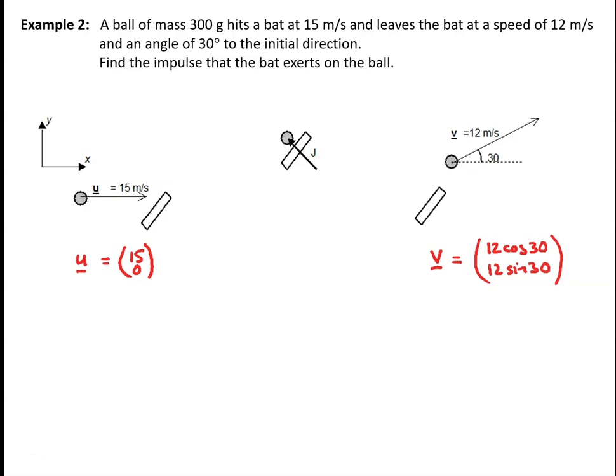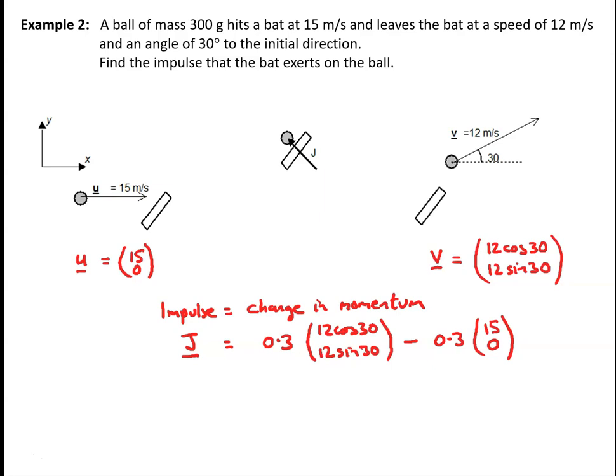To find the impulse, we use impulse equals change in momentum. So the impulse J equals the final momentum, which is 0.3 times (12 cos 30, 12 sin 30), minus the initial momentum, which is 0.3 times the vector (15, 0).